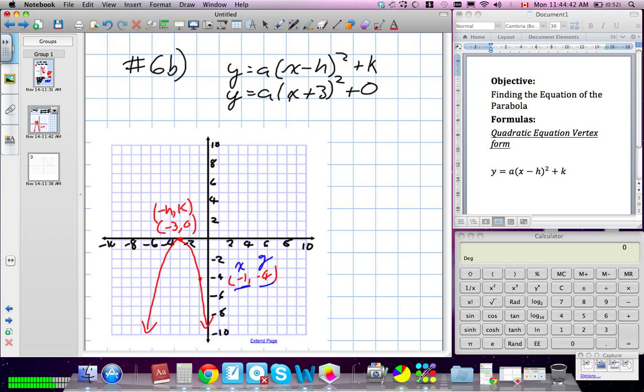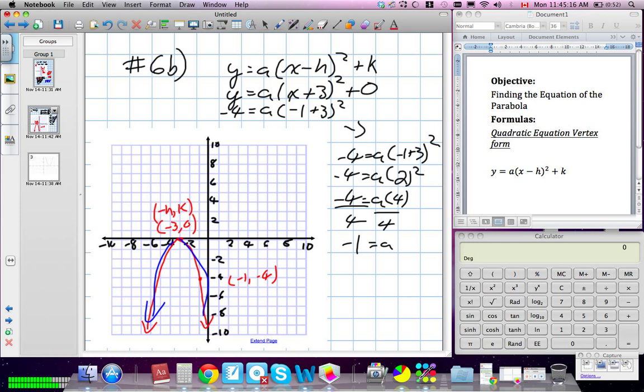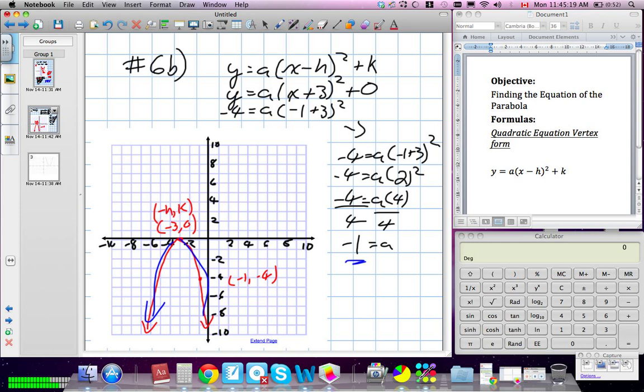Here is our x and y. So we're going to speed through this a little since we've already done this process. y is negative 4 is equal to a, x is negative 1 plus 3 squared. When we evaluate the brackets, we get the number 2 squared. a times 4 is equal to negative 4. And then when I divide, a is equal to negative 1, which makes sense because our parabola is opening downwards. And remember, any time a is negative, we have a downward opening parabola.